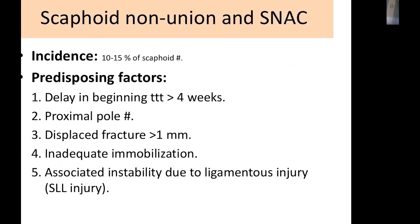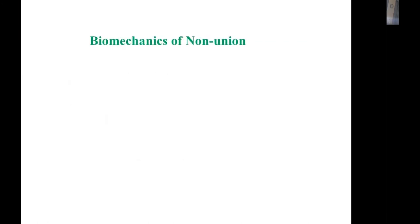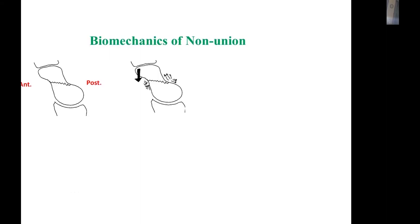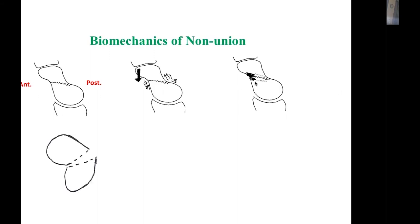Scaphoid non-union occurs in 10 to 15 percent of scaphoid fractures due to poor blood supply. Other risk factors include delay in treatment, proximal pole fractures, displaced fractures, inadequate immobilization, and associated instability. The scaphoid has a flexion moment due to its oblique position, leading to attritional changes on the volar aspect, progressive flexion, and the characteristic humpback deformity.